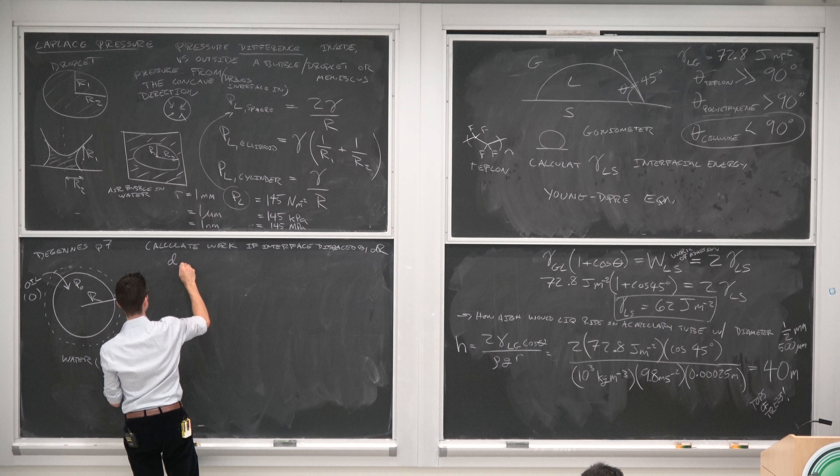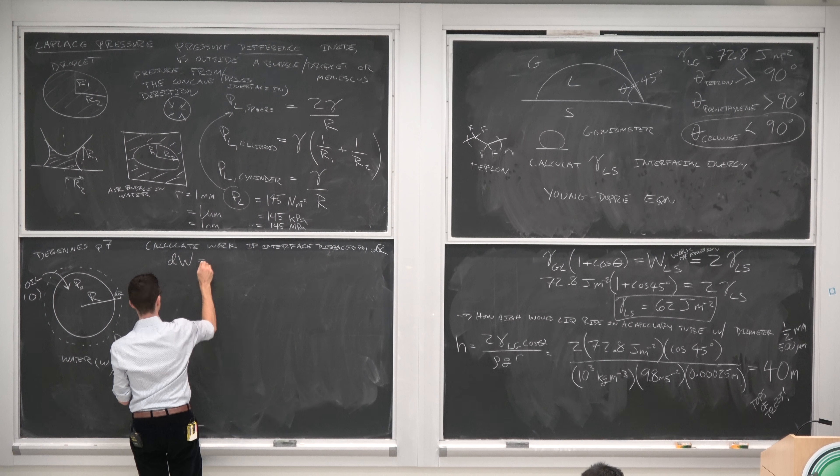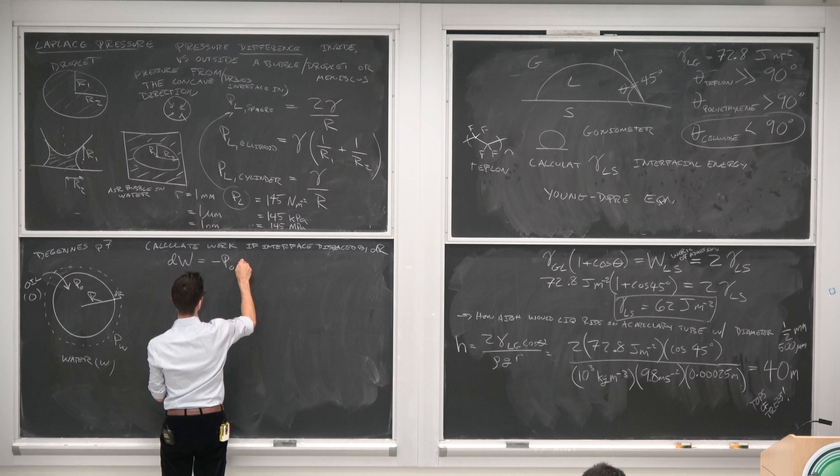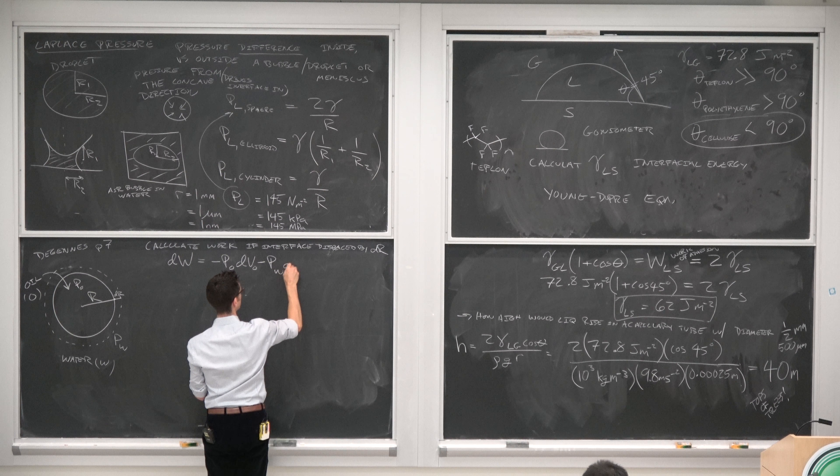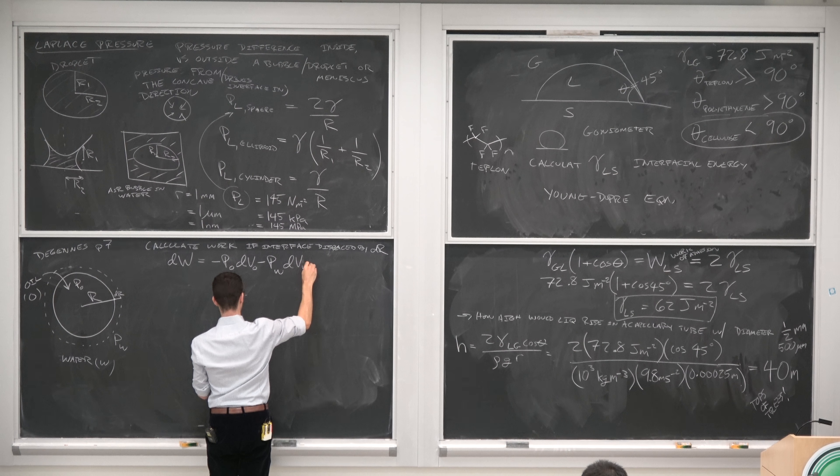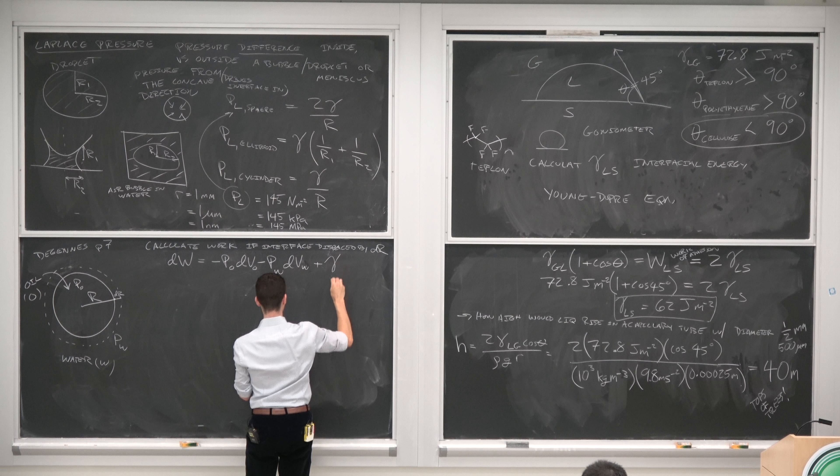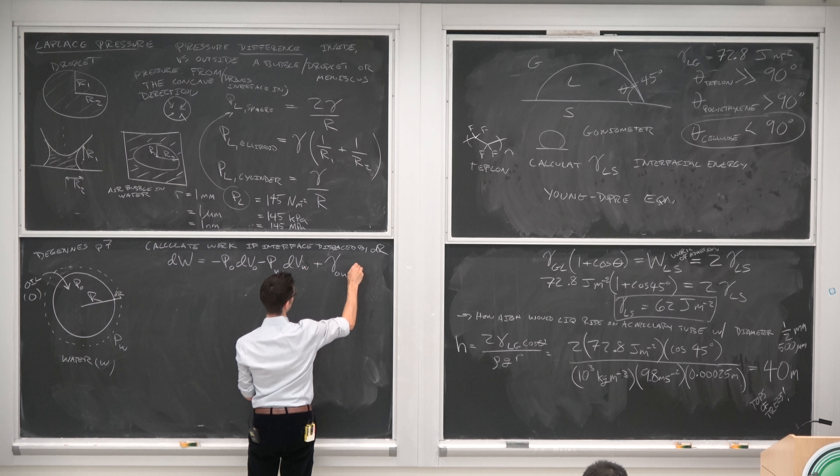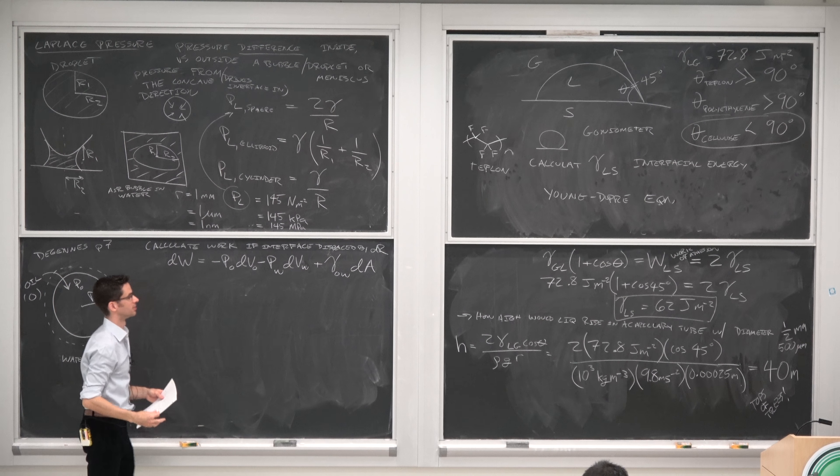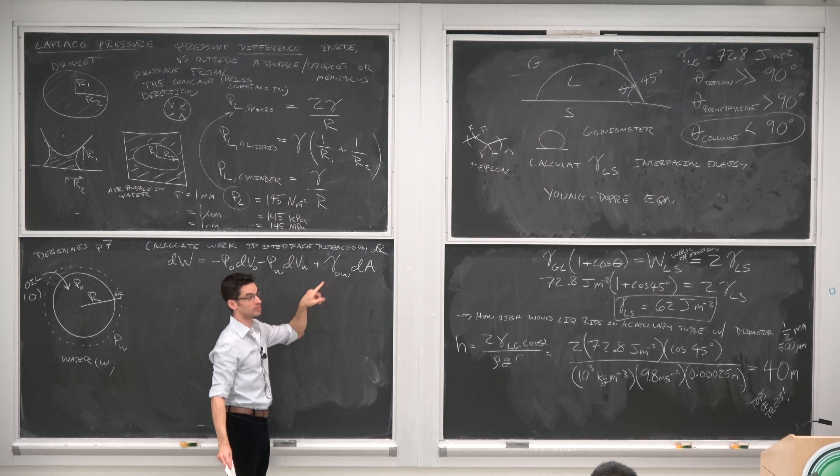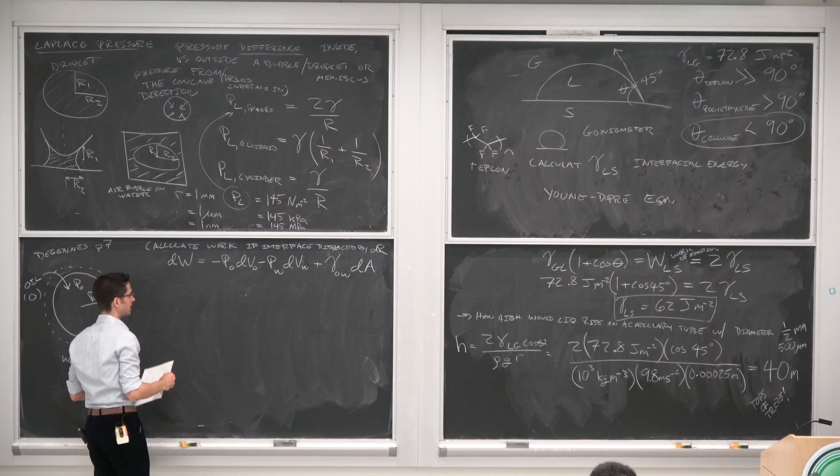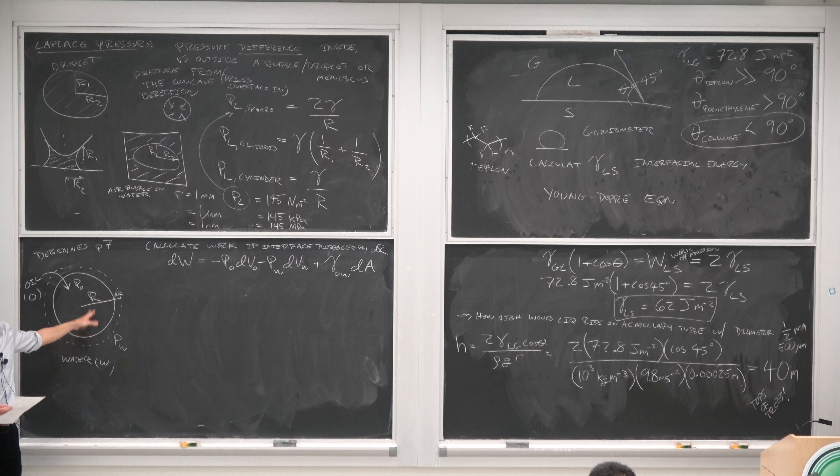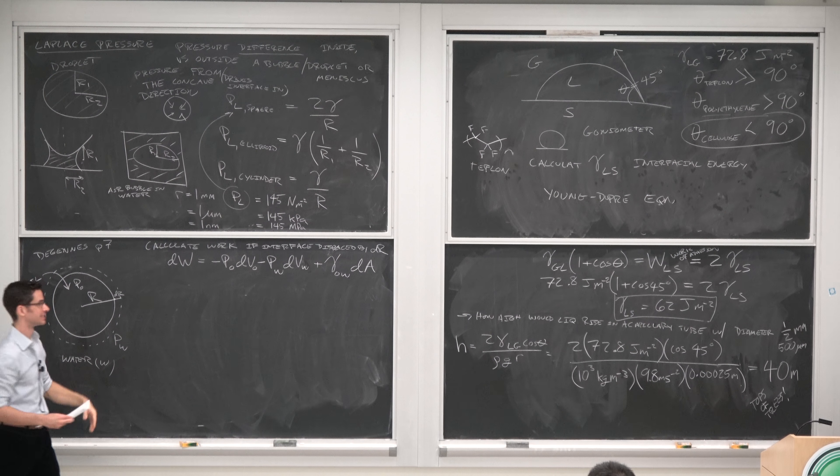So we have dW is equal to the pressure-volume work done in the oil phase and the pressure-volume work done in the water phase, plus some change in total surface energy due to expansion of the interfacial area. So the change in area, incremental change in area, times the interfacial energy per unit area between oil and water. Now we have dVs and dAs, but we don't have dVs and dAs here. We only have Rs, so we need to convert the dVs and dAs into Rs.